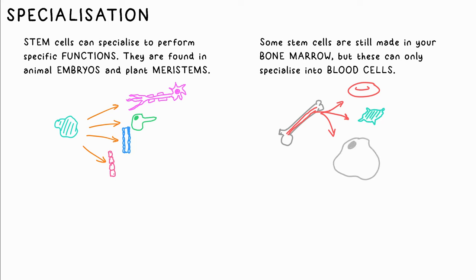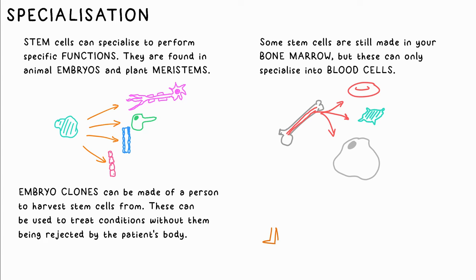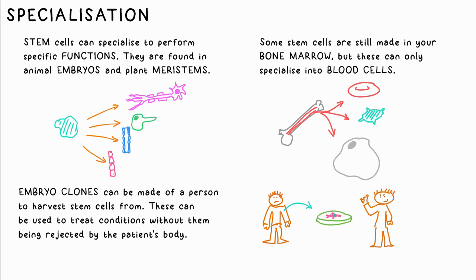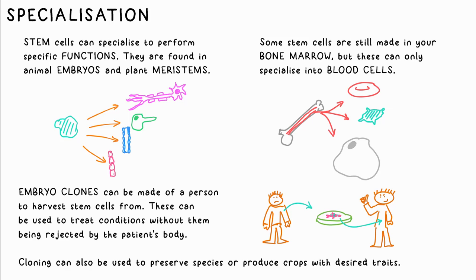We can use stem cells to combat conditions like diabetes and paralysis. People are now getting clones of themselves made, then harvesting the stem cells, as these won't be rejected by the patient. Personally, this raises significant ethical concerns — you have to weigh up the ethical arguments for yourself. Cloning plants can also be used to prevent species from becoming extinct or to produce crops with specific characteristics.